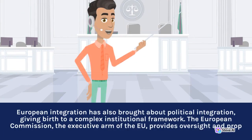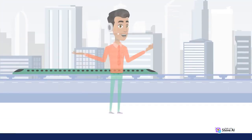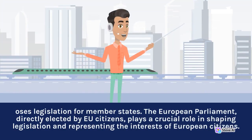European integration has also brought about political integration, giving birth to a complex institutional framework. The European Commission, the executive arm of the EU, proposes legislation for member states. The European Parliament, directly elected by EU citizens, plays a crucial role in shaping legislation and representing the interests of European citizens.